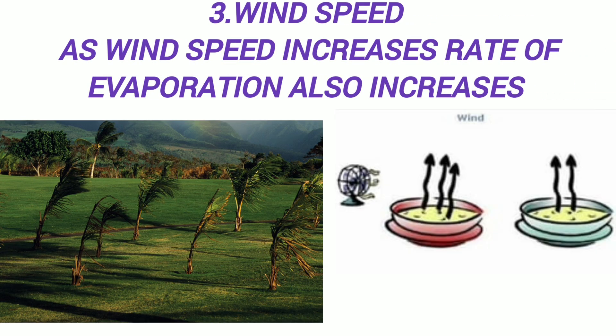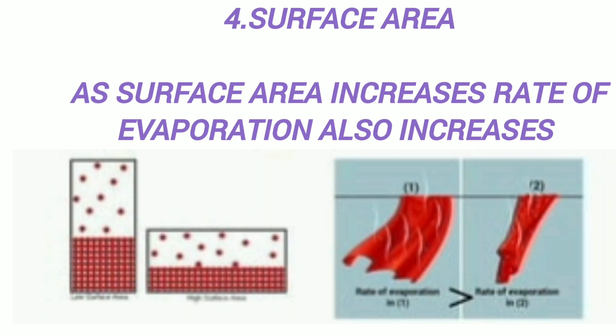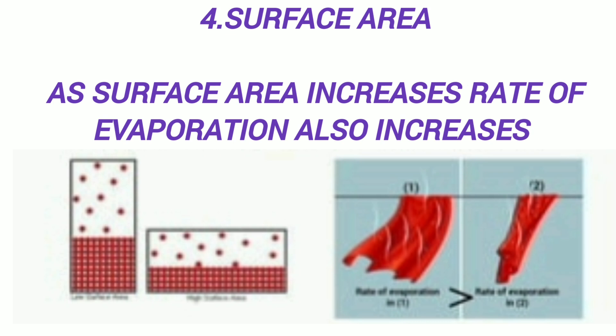Effect of wind speed on evaporation: as wind speed increases, the rate of evaporation also increases. As wind speed increases, the atmospheric water vapor is moved away at a faster rate, causing humidity to decrease, so the rate of evaporation increases.